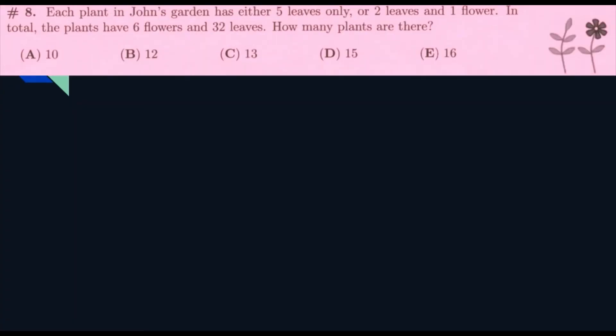So, the next question. Each plant in John's garden has either five leaves only or two leaves and one flower. In total, the plants have six flowers and 32 leaves. How many plants are there? So, if it's six flowers, we would need six flowers, so that would get counted. And then, because it's two leaves and one flower, we would do six times two, which is 12. And, we would do 32 minus 12. And, that would get 20. And then, we can do the rest with the five leaves only. And, 20 divided by five is four. And, we can do six plus four and get ten. So, our answer would be ten.